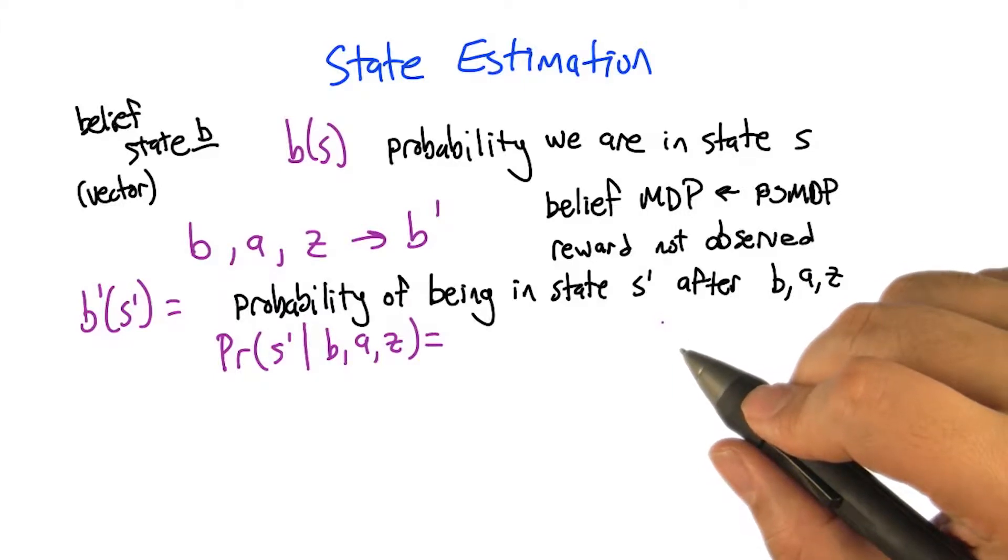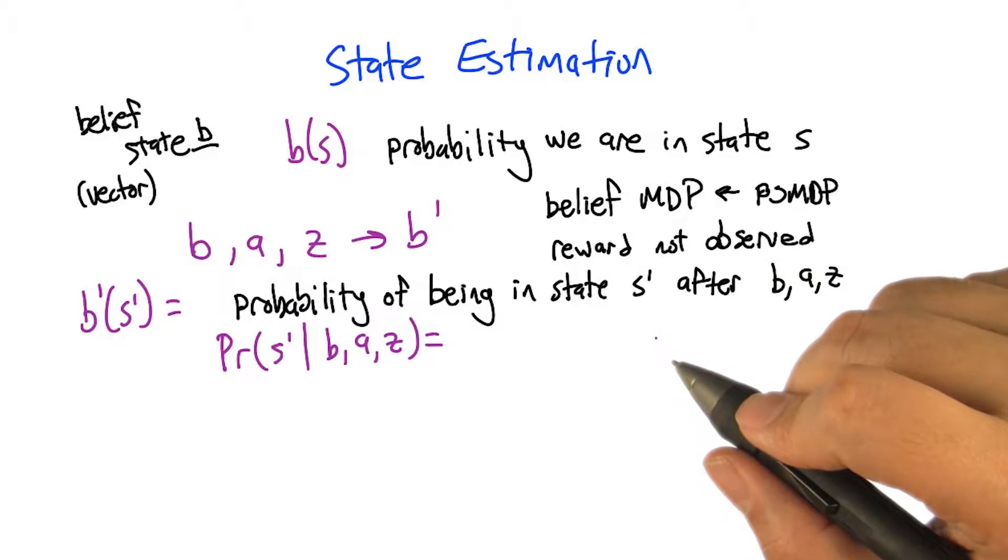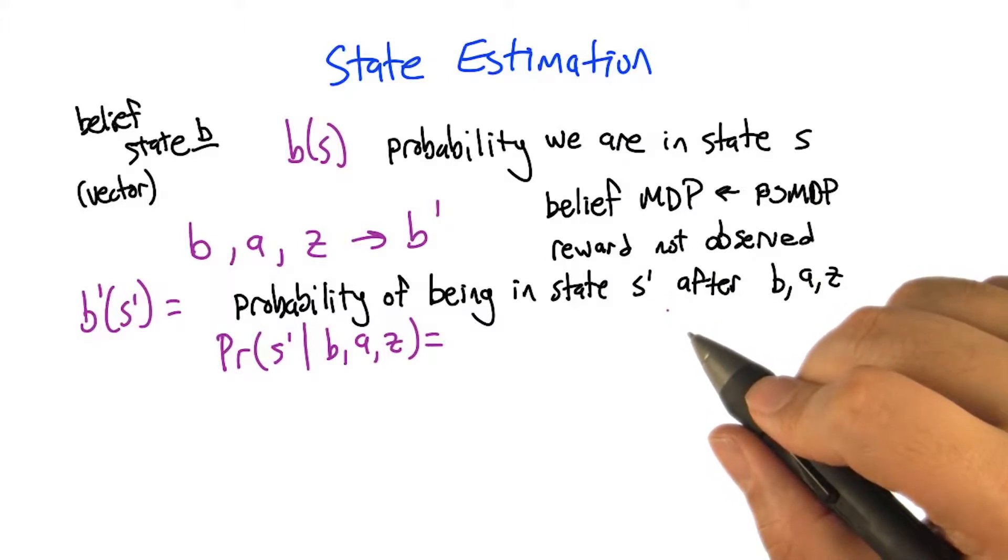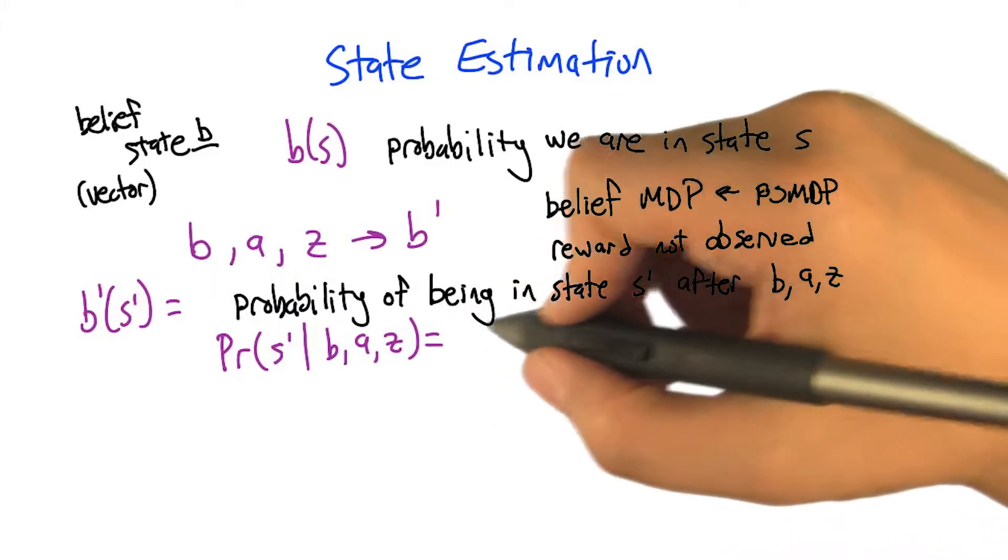So what would be a piece of information that, if we knew it, would make it relatively straightforward to figure out what new state we were in? Well, if we knew which state we were in before, since we have a transition model, we know which states we are likely to be in next.